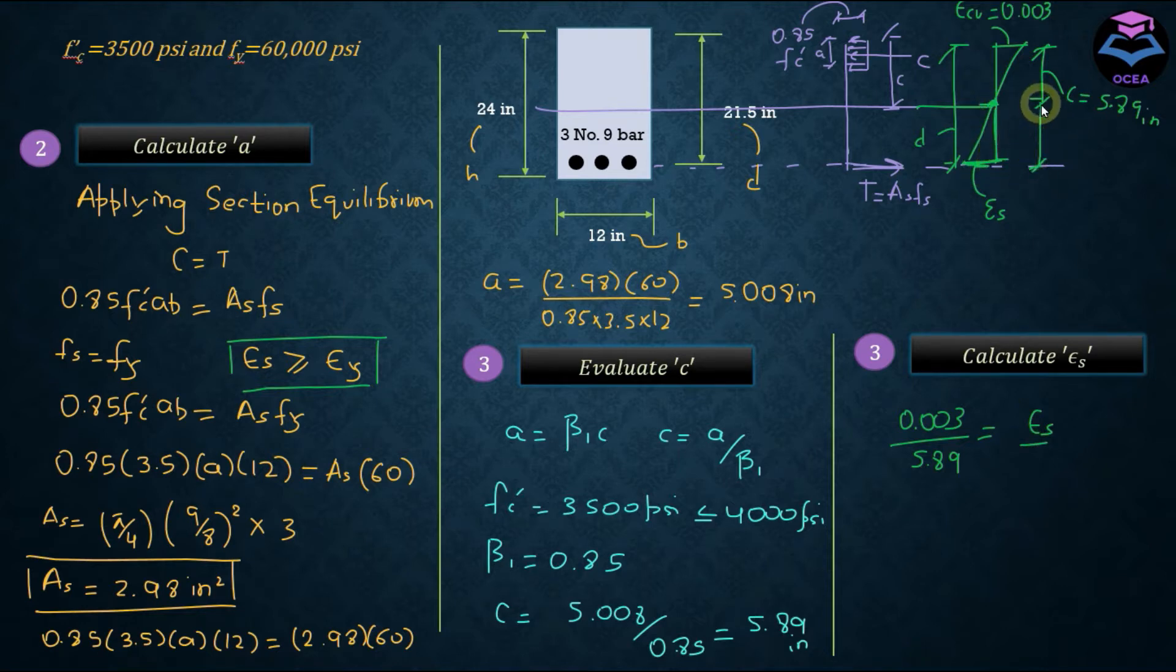Perpendicular from here to here is D minus C. And if I plug in the values of D minus C here, this equation becomes D is equal to 21.5 and C is equal to 5.89. And if I calculate epsilon s from here, it is equal to 7.950 times 10 to the power minus 3.